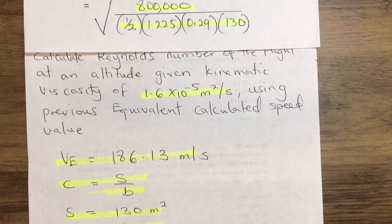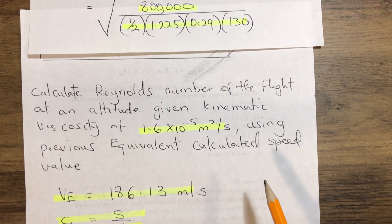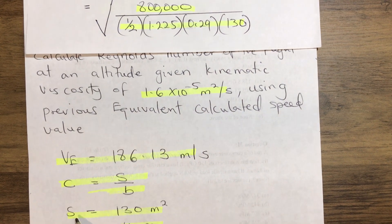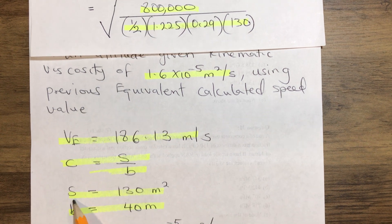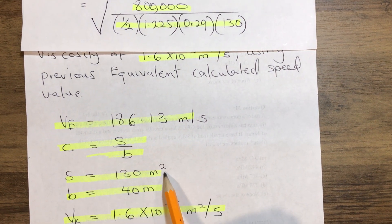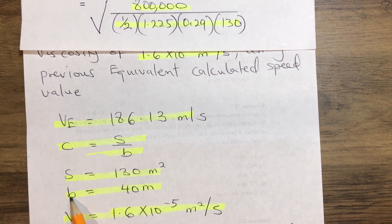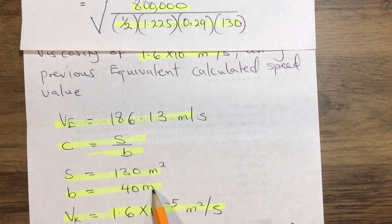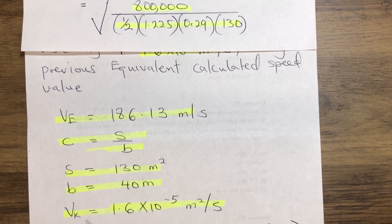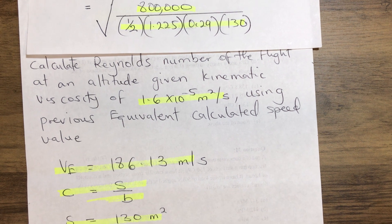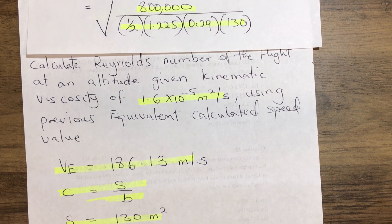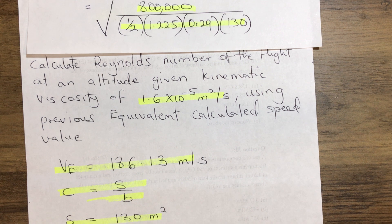So don't let us forget we are given from our previous video: the wing area is 130 meter squared, the span B equals 40 meters, and our kinematic viscosity equals 1.6 times 10 raised to power minus 5 meter squared per second.